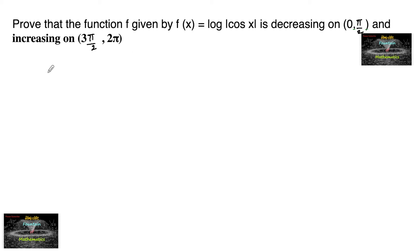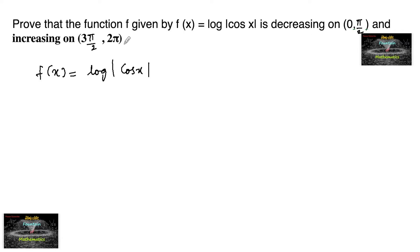Prove that the function f given by f(x) = log|cos x| is decreasing on (0, π/2) and increasing on (3π/2, 2π). Note that 0 to π/2 is the first quadrant and 3π/2 to 2π is the fourth quadrant.